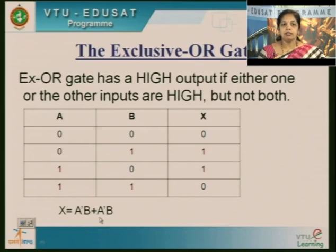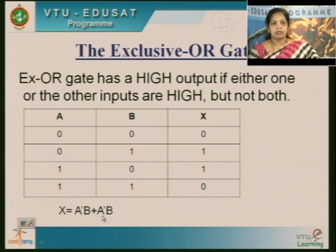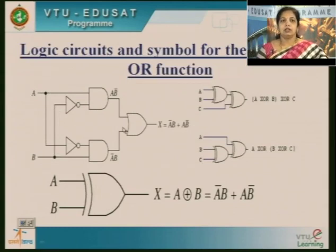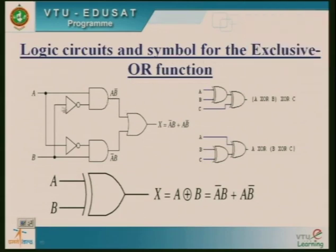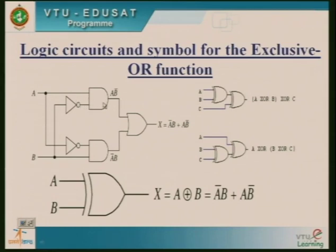The expression is A complement B plus A B complement. To generate the XOR operation, we need NOT gates to generate the complements. We have two AND gates — one for A complement B and one for A B complement — and one OR gate. The output is the summation of A B complement and A complement B. So the logic circuit for XOR gate consists of two AND gates and one OR gate.